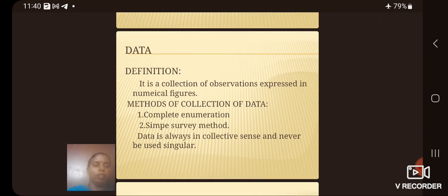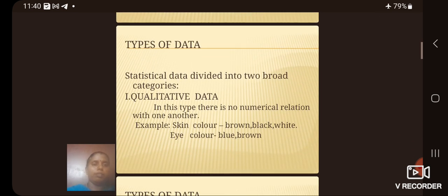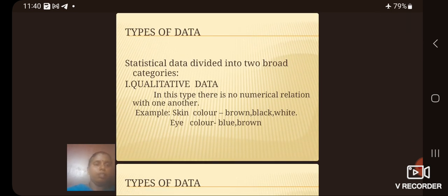Data is always in collective sense and never used in singular. Then we see the types of data. Statistical data is divided into two broad categories. First one is qualitative data. In this type there is no numerical relation with one another. Example: skin color and eye color.